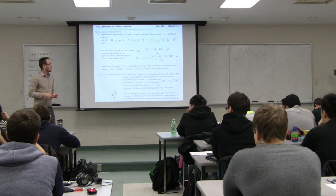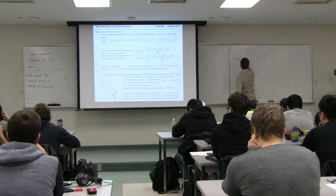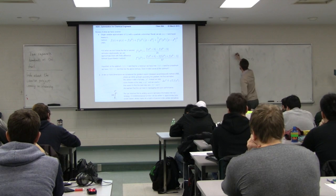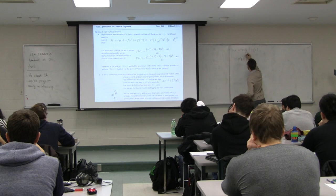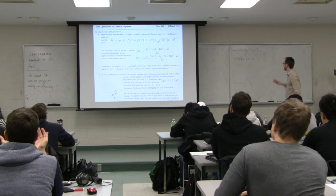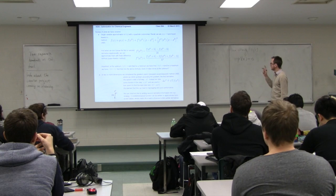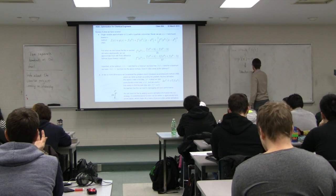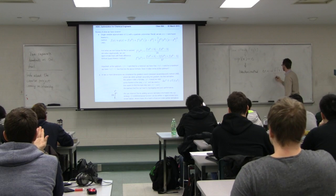What we derived in the last class is that when we set the first derivative of p(x) equal to zero, we automatically solve the optimization problem. So if your objective is to minimize or maximize the function, you can convert that optimization problem into an algebraic problem: take the first derivative, set it to zero, and the solution is the optimum. When we do that, we find Newton's method, which says delta x equals the negative of the first derivative over the second derivative.